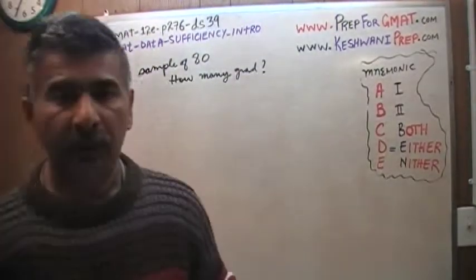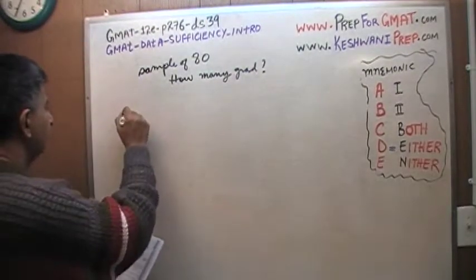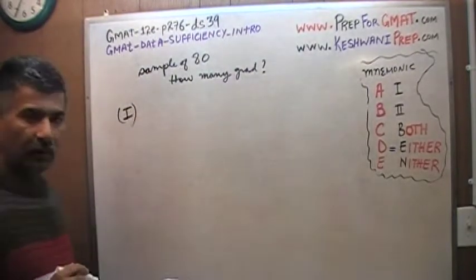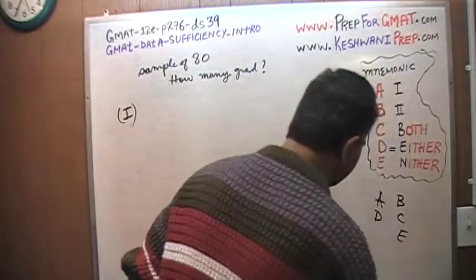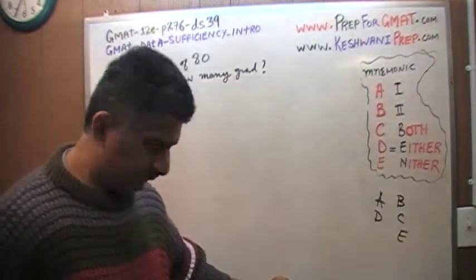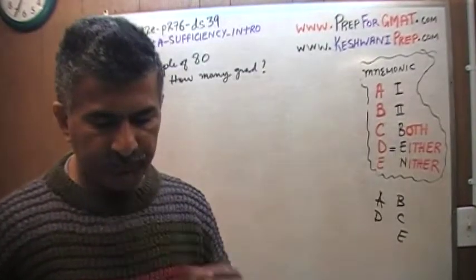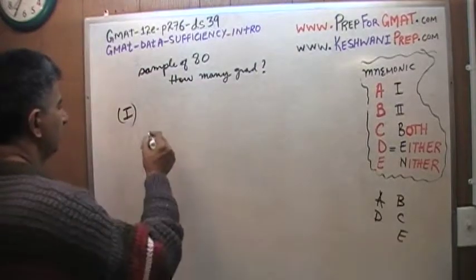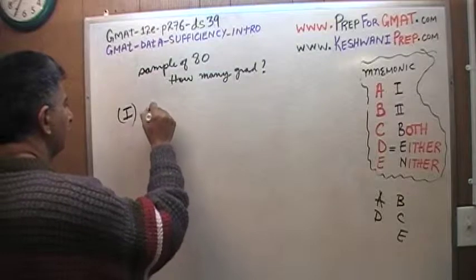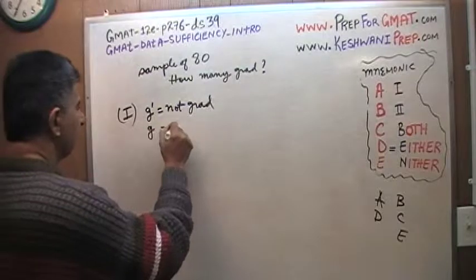Let's see what sort of information they gave us in the two statements. Since this is a data sufficiency problem, the very first thing we should do is write down A, D, B, C, E to keep track of our answer choices. Let's look at the first statement. We'll use G to represent graduates and G-prime (G') to represent adults who are not college graduates.